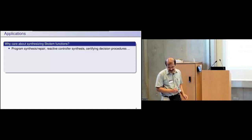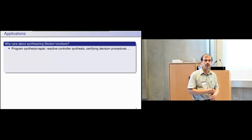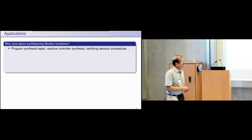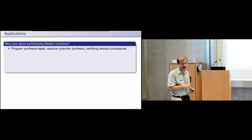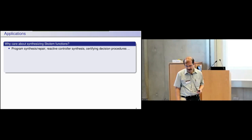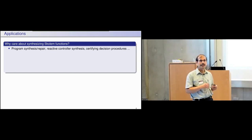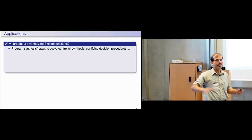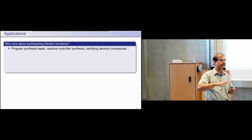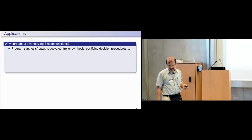The question is: we know Skolem functions exist and they are very useful in reasoning about first order logic, but why do we care about getting Turing machines that compute them? It turns out this is a very practically useful thing — for example, program synthesis, program repair, reactive controller synthesis, and decision procedures. Skolem functions provide the certificate that a formula is valid: you plug in the Skolem functions and it becomes just universal reasoning.